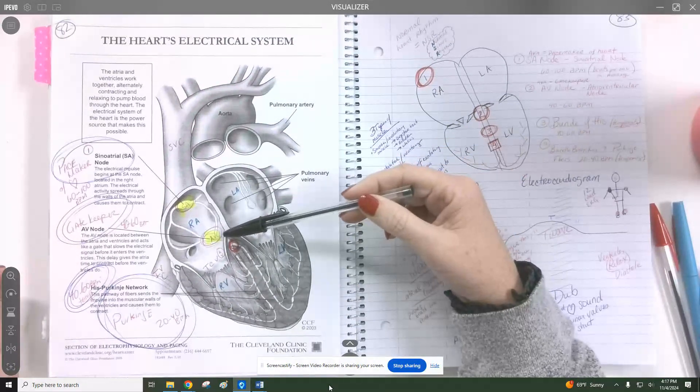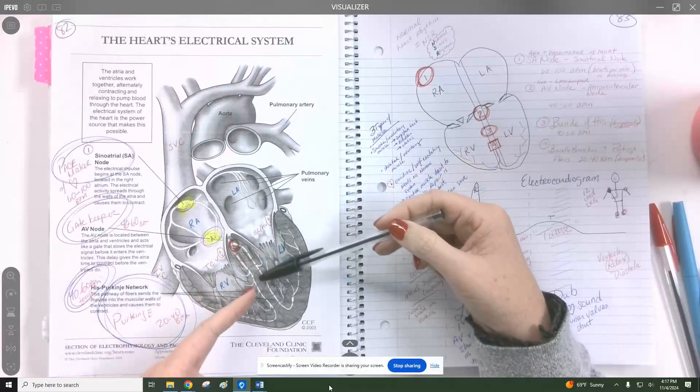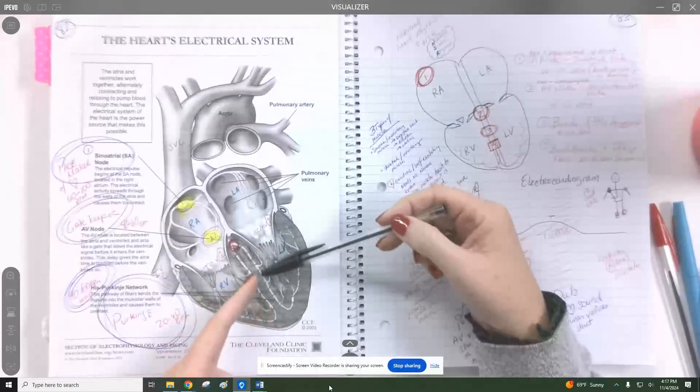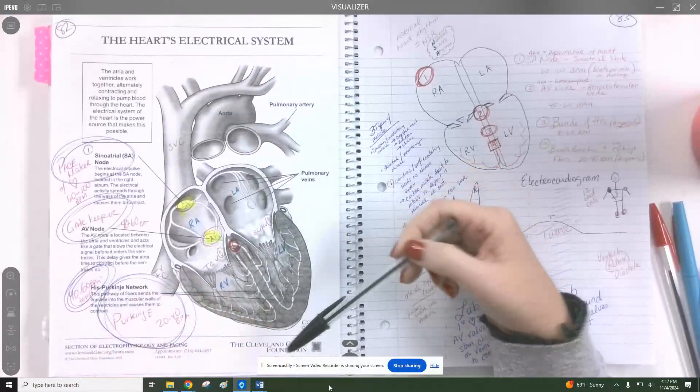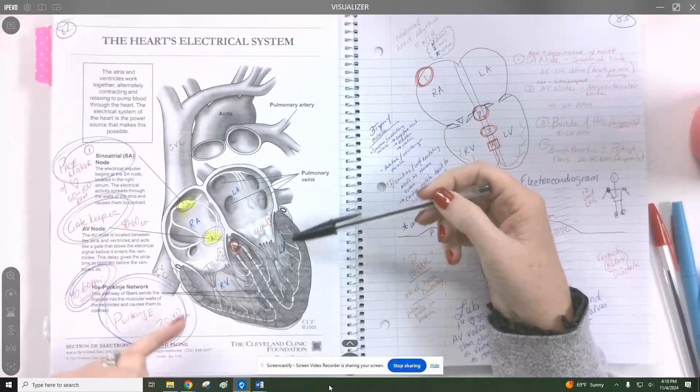Then there's a bit of a pause before the next contraction or component of the contraction will happen because that trigger needs to get spread through the bundle of Hiss down the two bundles, the bundle branches, and throughout all of the different fibers, Purkinje and smaller fibers throughout the muscularity of the ventricles.